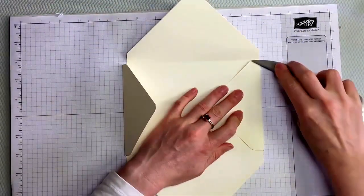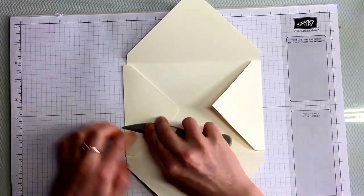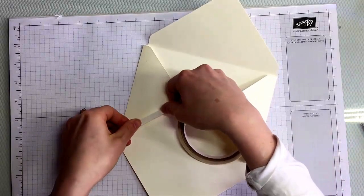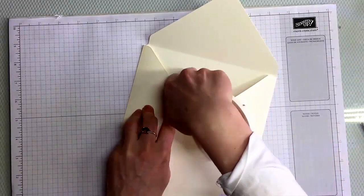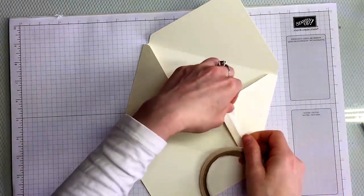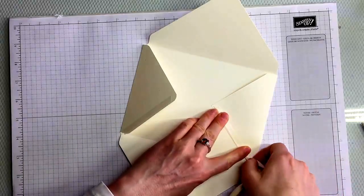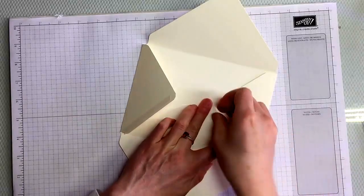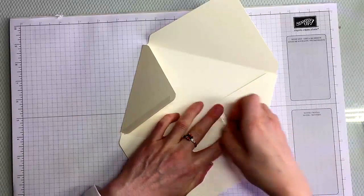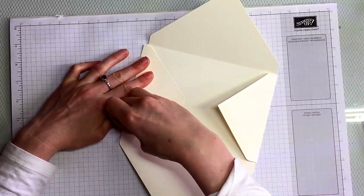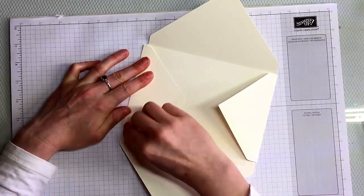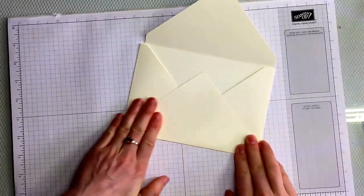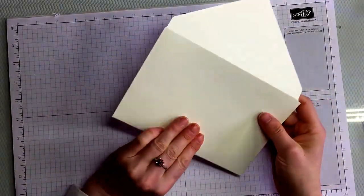Now as far as adhering, I tend to like to use the tear and tape because it doesn't have any dry time and it's a sure thing. So you just put it along the two flaps. Pull up the backing, burnish it with your finger first. That will make the backing, help the backing come off a lot easier. And then you'll just fold up that. Okay. Then that's your envelope. Very easy.